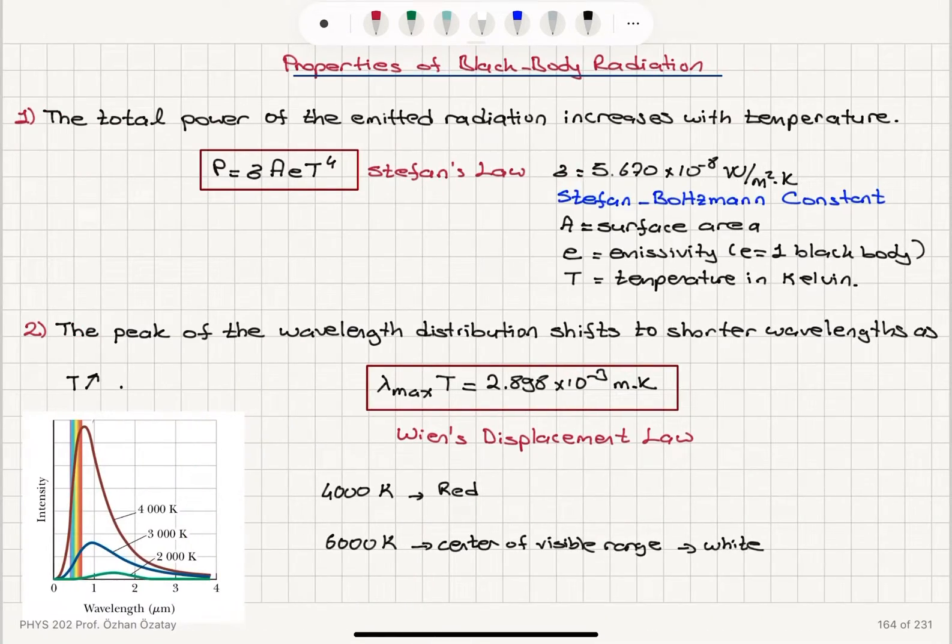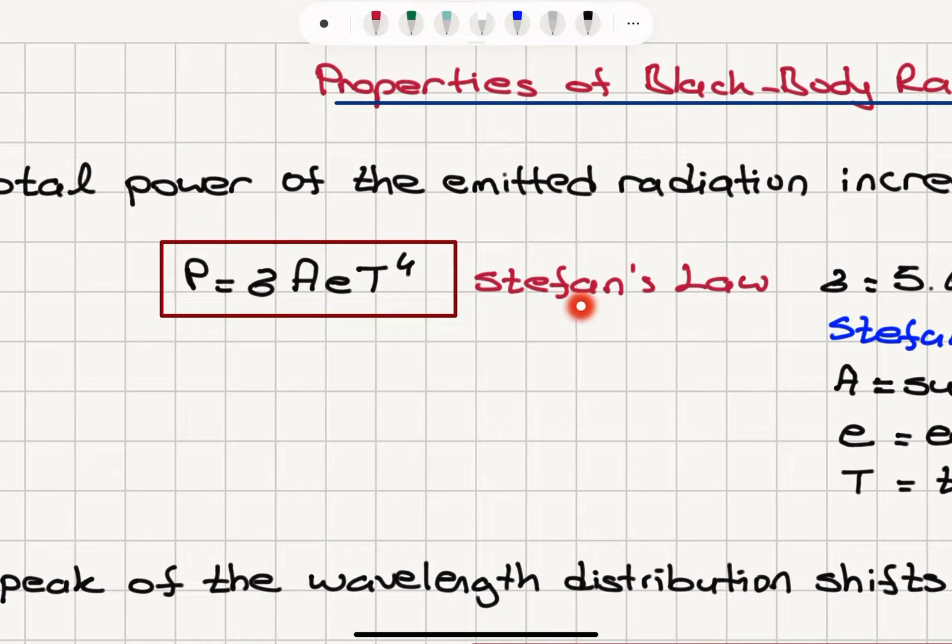Let's take a look at some properties of the black body radiation. The first one is something we're familiar with. It's the total power of the emitted radiation increases with temperature as T to the fourth power. This is known as Stefan's law.